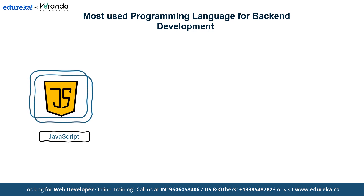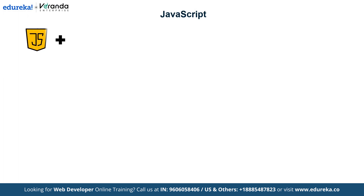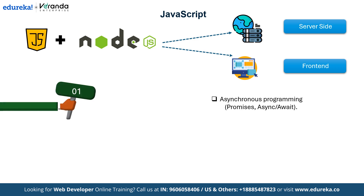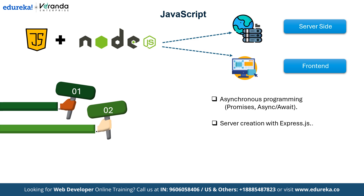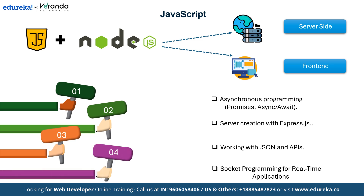The first language is JavaScript, followed by Python, Java and Ruby. JavaScript is a powerful, versatile language widely used for both backend and frontend development. With Node.js, JavaScript extends beyond the browser and enables server-side programming. Key concepts include asynchronous programming — mastering promises and async/await to handle non-blocking operations — server creation by building robust servers with frameworks like Express.js, working with JSON and APIs to seamlessly exchange and integrate data with third-party services, and socket programming for developing real-time applications using web sockets. With JavaScript and Node.js, you can bridge the frontend and backend, creating full-stack applications with a single programming language.